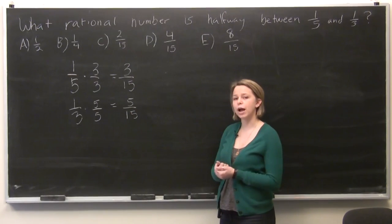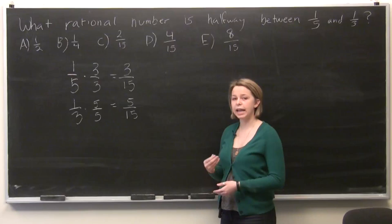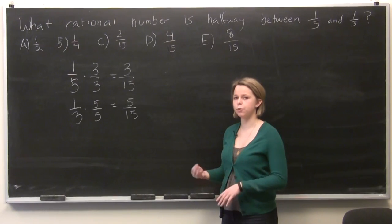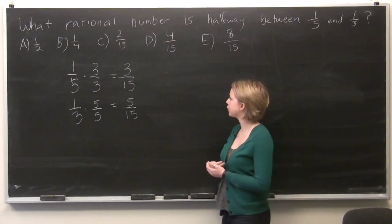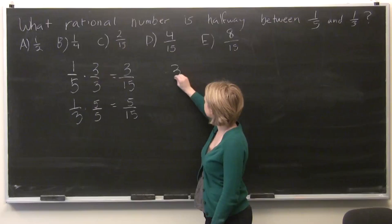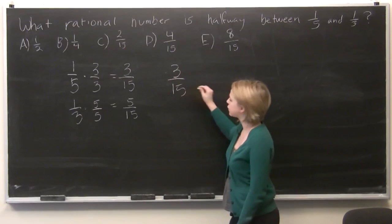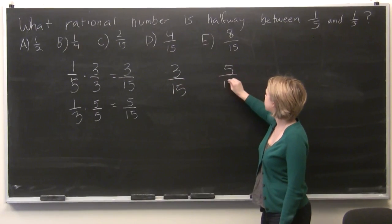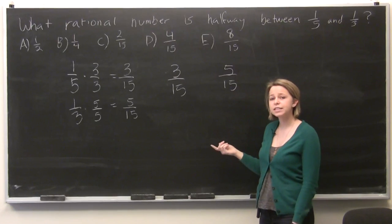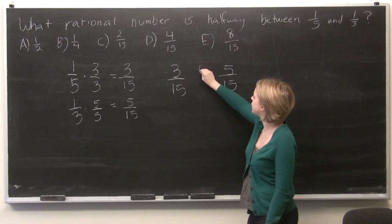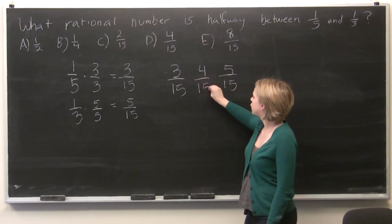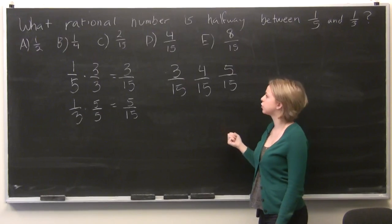Remember that we're looking for a rational number, which means it has an exact number of digits. It won't repeat on forever like pi, for example. And so if we list our two numbers together, 3 over 15 and 5 over 15, it's obvious that the one halfway in between is simply 4 over 15, which is a rational number.